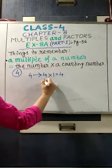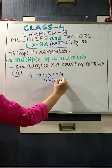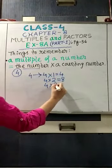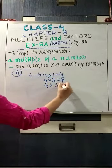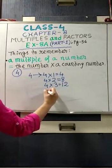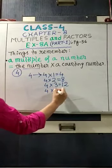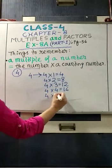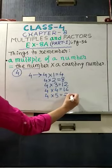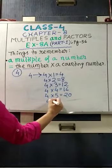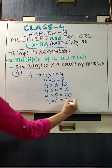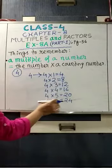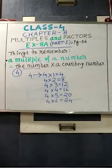4 into 1 is 4, 4 into 2 is 8, 4 into 3 is 12, 4 into 4 is 16, 4 into 5 is 20, 4 into 6 is 24. These are the first 6 multiples of 4.